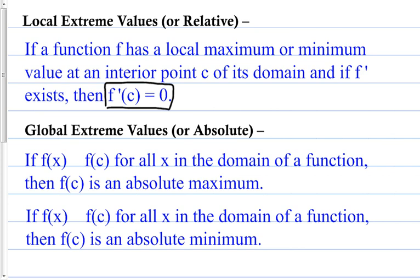So I'll be able to find a maximum or minimum wherever my derivative equals 0. Remember, the derivative is slope. If the slope equals 0, that means this will be a location on the graph where I can draw a tangent line that is horizontal. At the very top of a maximum, the tangent line would be horizontal, and therefore the derivative equals 0 because the slope is 0.